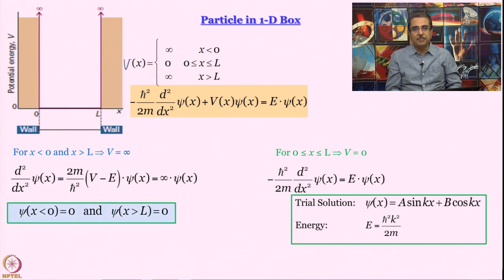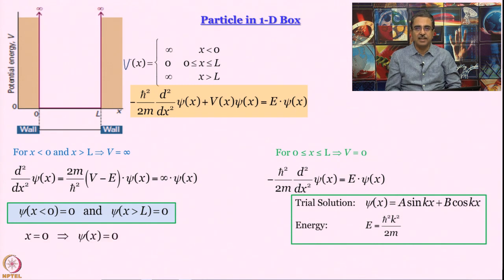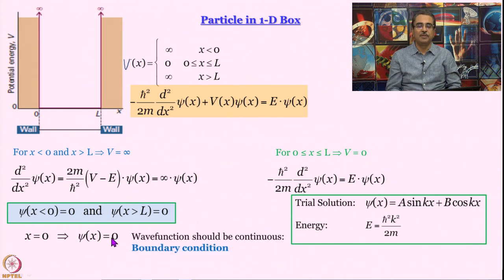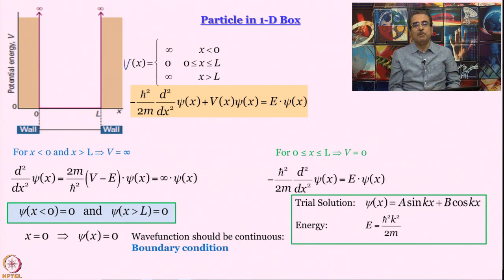Now let us look at what happens at the boundaries. For x less than 0, the wave function equals 0. Recall the Born interpretation: ψ·ψ* is the probability density, and one condition ψ must satisfy is that it must be continuous. Since at any point just below x = 0 the wave function is 0, continuity implies that at x = 0, ψ(x) must also equal 0. This is called a boundary condition — a condition that puts a restriction on the wave function.